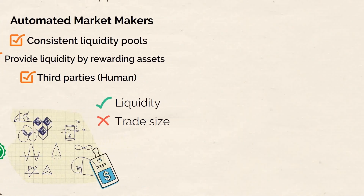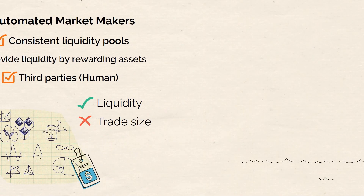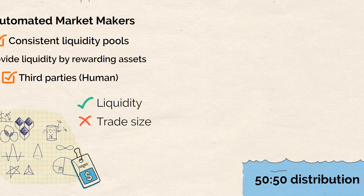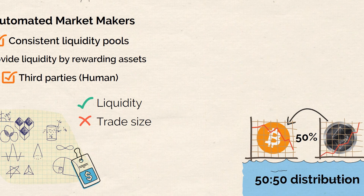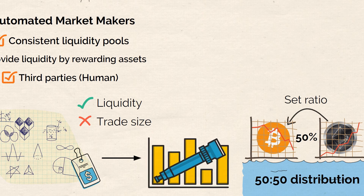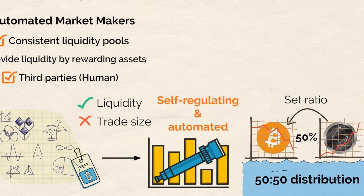Imagine if a liquidity pool has a 50-50 distribution of two coins, such as 50% Bitcoin and 50% Ether. If you purchase Bitcoin using Ether, the pool will experience a decrease in Bitcoin and an increase in Ether. To maintain the set ratio, the algorithm adjusts the price of Bitcoin upward and the price of Ether downward. This process is a self-regulating and automated response to the market's demands.